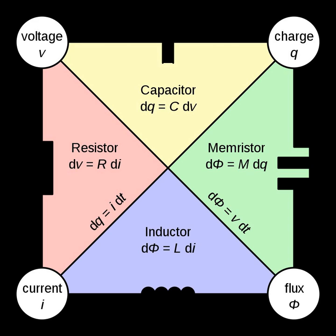Circuit elements can be classified into different categories. One is how many terminals they have to connect them to other components. One-port elements represent the simplest components, that have only two terminals to connect to. Examples are resistances, capacitances, inductances, and diodes.